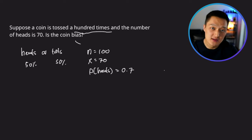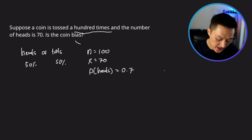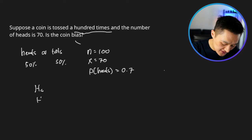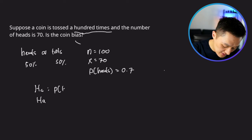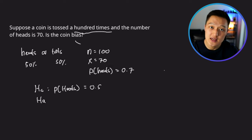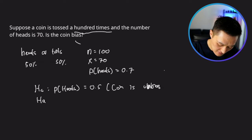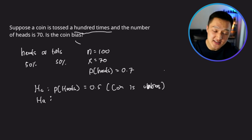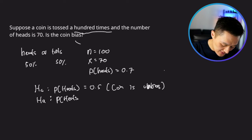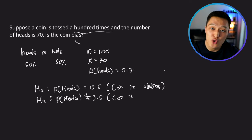Step 1 is setting up the hypothesis statements. The null hypothesis is that the probability of heads is 0.5 — this is the statement we use to say the coin is unbiased. The alternative hypothesis is that the probability of heads is not 0.5, meaning the coin is biased.